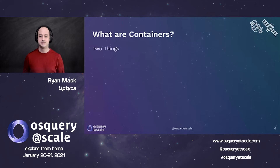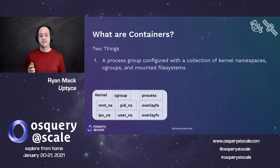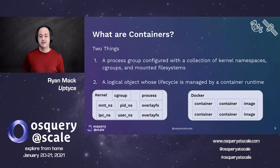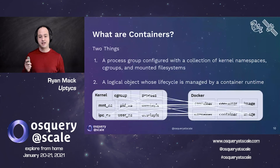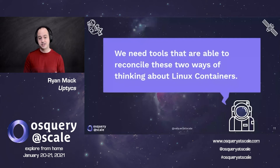So why did I give you this history? Because it's part of the important answer to what is a container. The answer really has two different ways of thinking about it. The first is all of these kernel features — a process group configured with different namespaces, different cgroups, and a mounting of layered file systems in order to configure the environment where your process runs. In addition to that, we also have the second idea, which is there's a logical object that lives inside your container runtime — an ID that Docker understands to be a container and an ID that Docker understands to be an image. We need tools that are able to reconcile these two ways of thinking about Linux containers. OS Query provides really comprehensive visibility into things happening inside your containers, in the runtime, as well as in the kernel, and it exposes SQL tools to allow you to join these concepts literally in your queries.